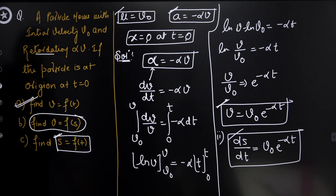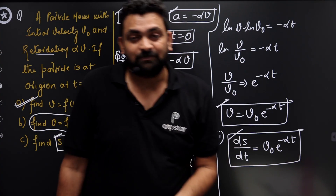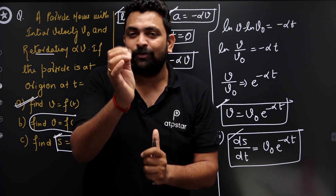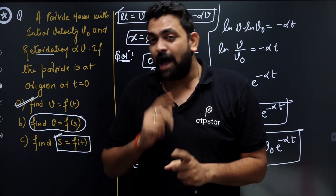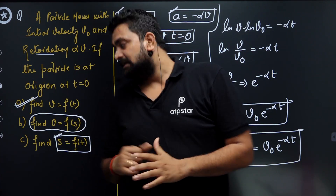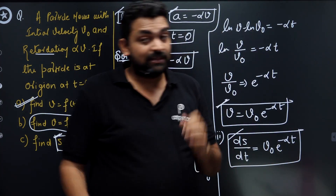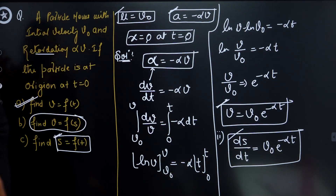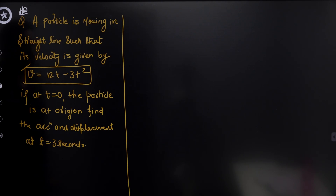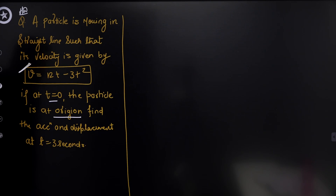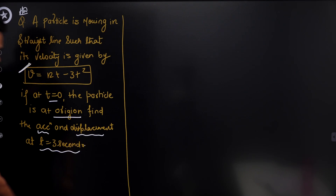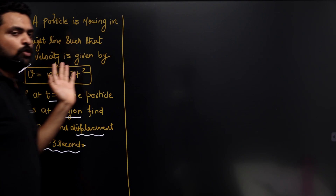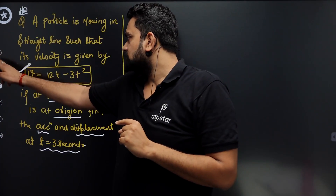For homework: find v as a function of s using the formula a equals v·dv/ds. There is also another problem: a particle's velocity is given as a function of time, and at t equals 0 the particle is at the origin — find acceleration and displacement at t equals 3 seconds. These are your homework problems.